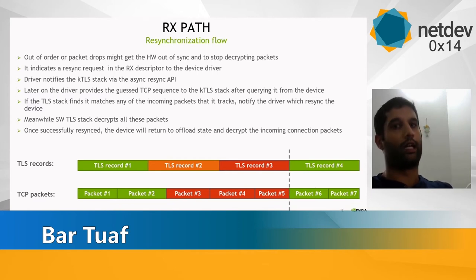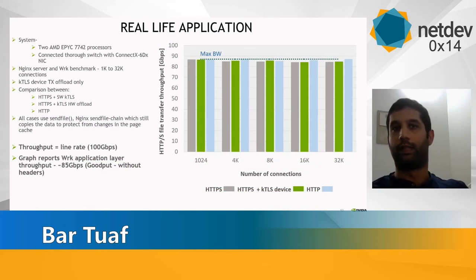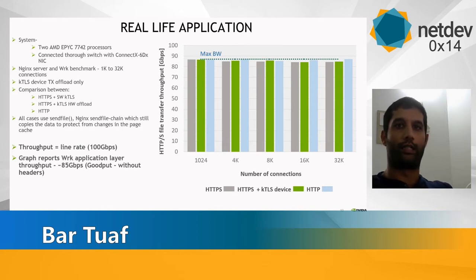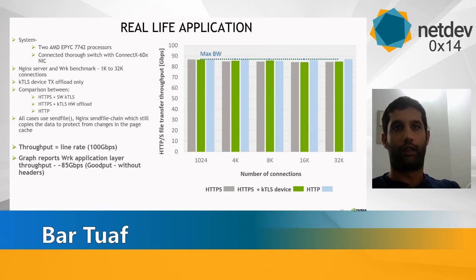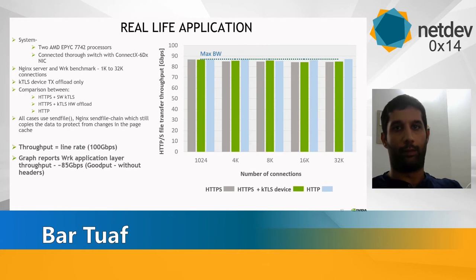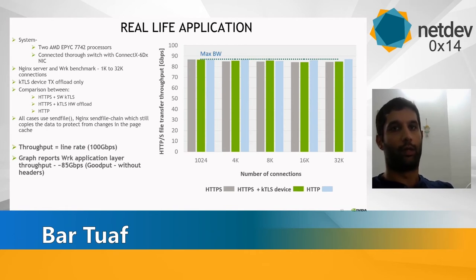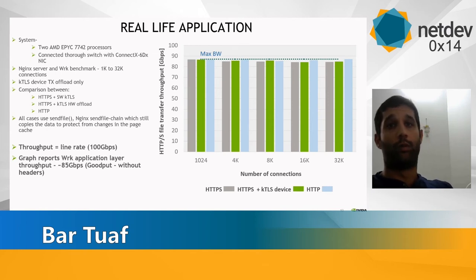To show the performance impact of kTLS hardware offload with an nginx server, we used two AMD EPYC systems connected through a switch with a ConnectX-6 Dx NIC to the wrk client. wrk opens different numbers of connections ranging between 1024 and 32K, with 64 threads, continuously requesting a one megabyte file from the server. nginx responds with either plain text HTTP, HTTP with software kTLS using OpenSSL TLS version 1.2, or HTTPS with kTLS hardware TX offload. We modified nginx to use sendfile also for TLS traffic.